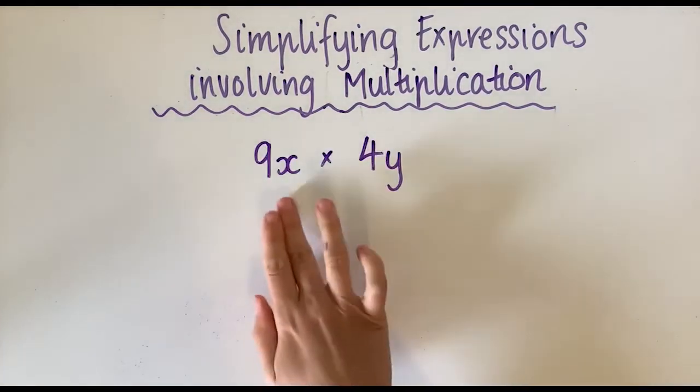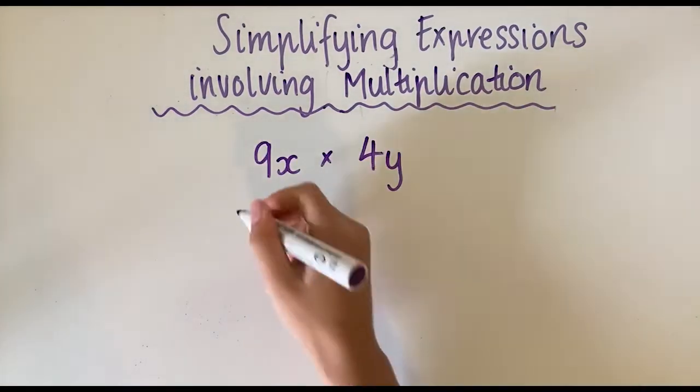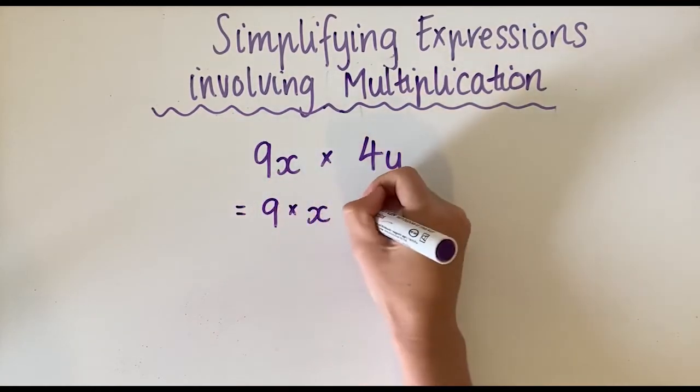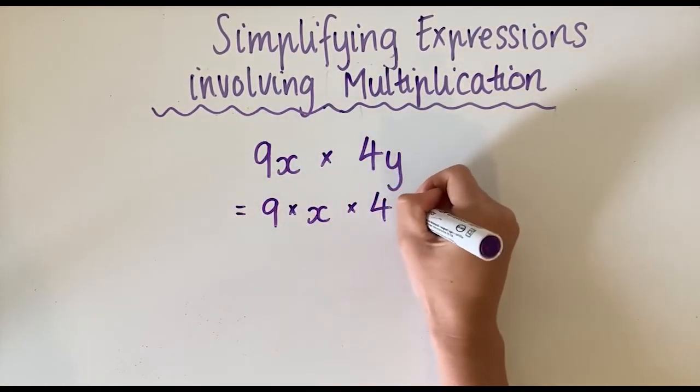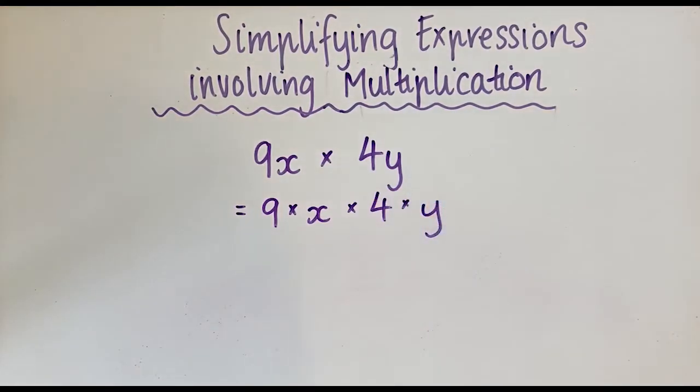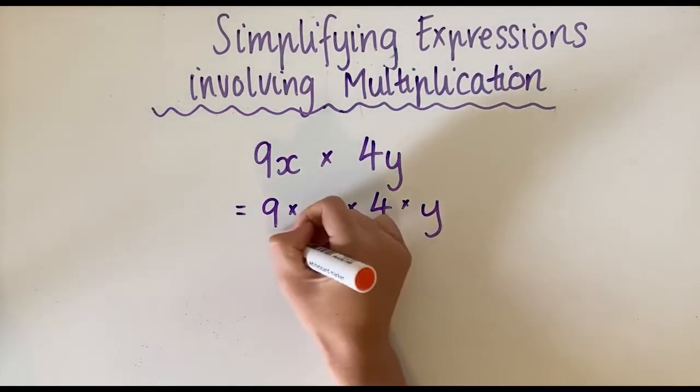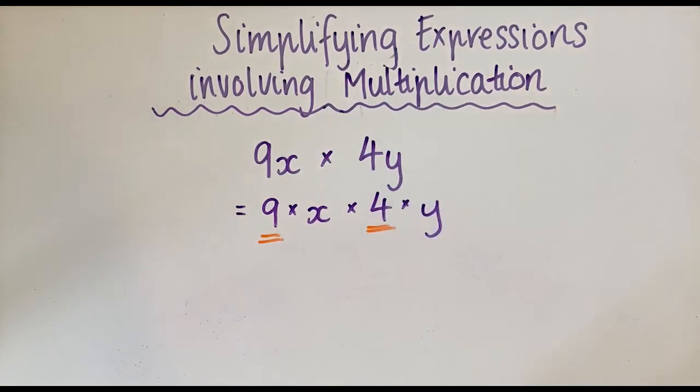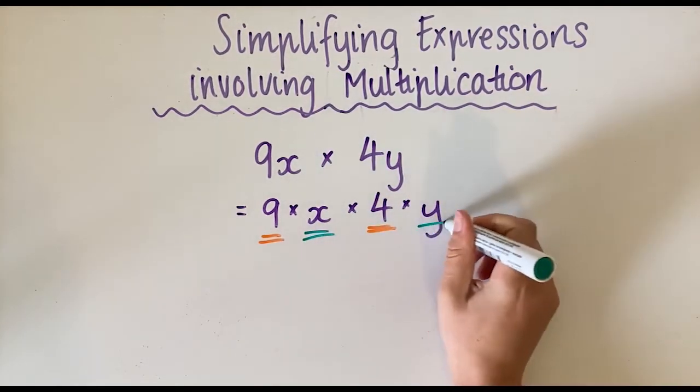For this one, we've got two terms. We're going to stretch it out first. We're going to go 9 × x × 4 × y. We're going to put the numbers together—9 and 4—and we're going to put the letters together—x and y.